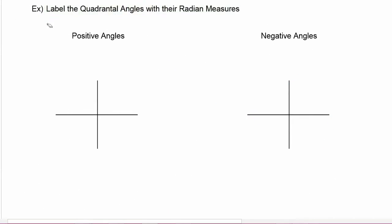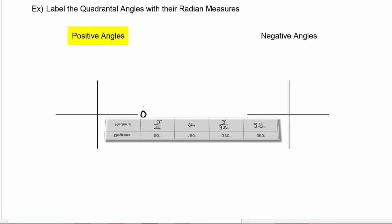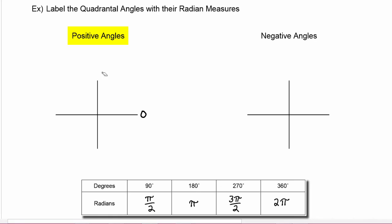Next we'll label the quadrantal angles with their radian measures. We know this is zero, and as we just discovered, 90 degrees is going to be π/2 radians, 180 degrees is going to be π radians.